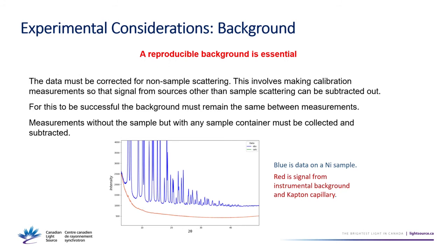You also need a reproducible background measurement. In regular powder diffraction you just fit and subtract a polynomial background, but for PDF you need to separate the diffuse scattering from the instrumental background. You must collect a background measurement — for example, if your sample is in a Kapton capillary, you measure the empty Kapton capillary and subtract it before processing. It's critical that the background stays the same between the sample and background measurements.